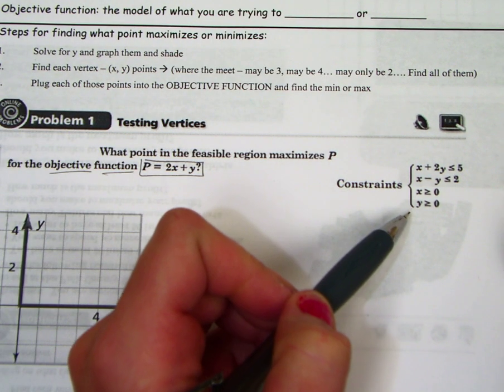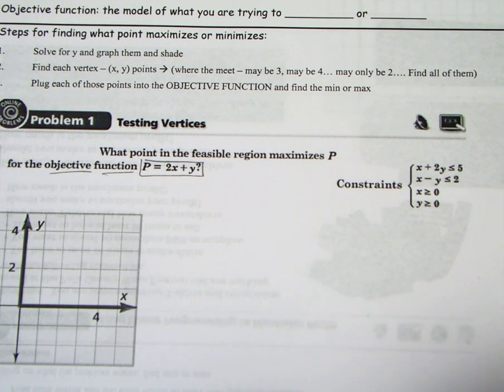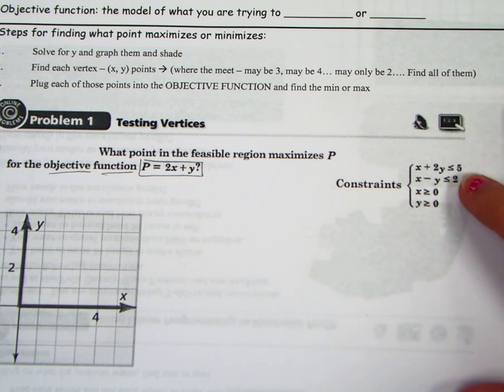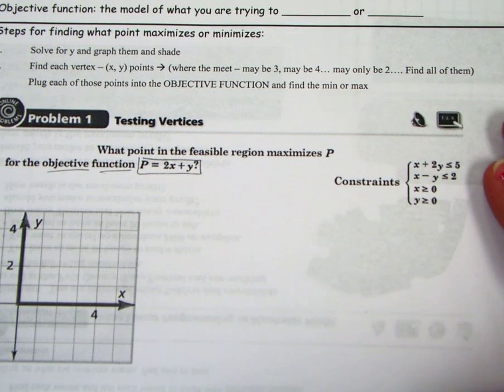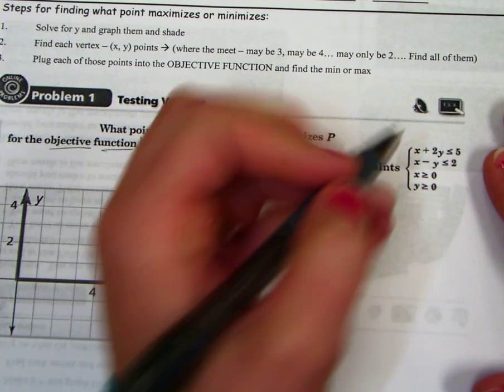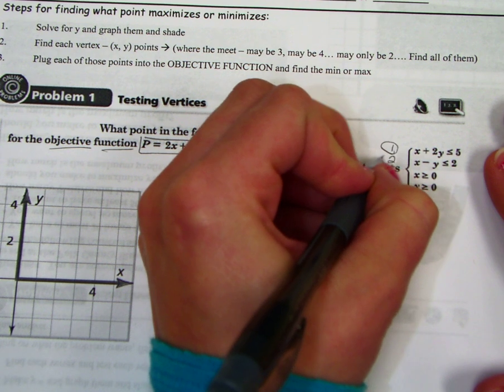So let's take a look at the different constraints that we're going to have. Now if you were in a different problem, in like a real life application problem, you might have constraints like how much money you have, how much time you have, how many things you want to make. And then you would make these equations, but right now they're just given to us so we can learn how to do it ourselves. We're going to graph each of these constraints. So let's call them 1, 2, 3, and 4 because there are 4 of them.